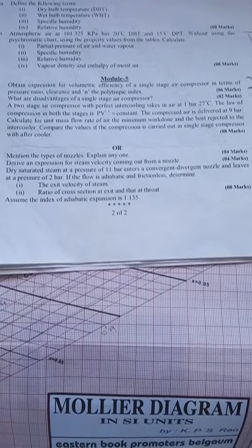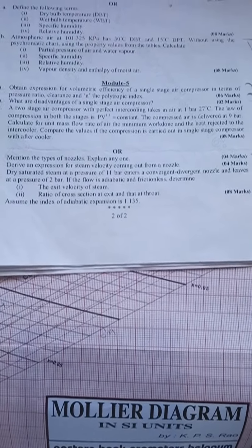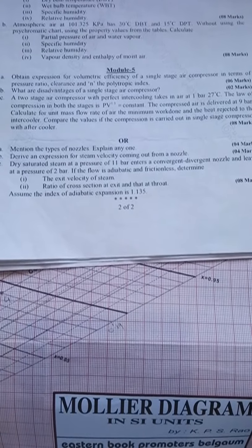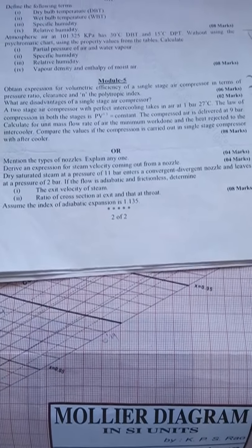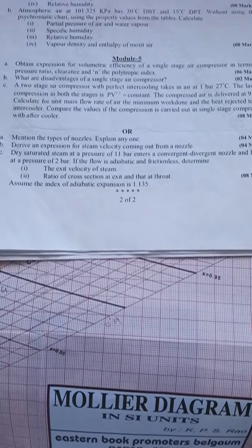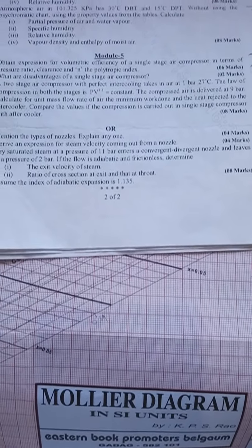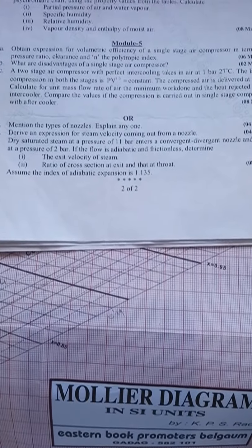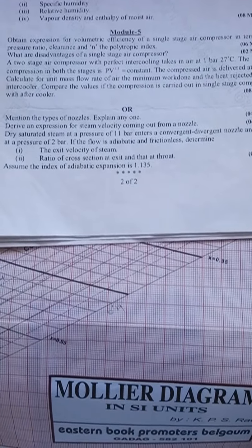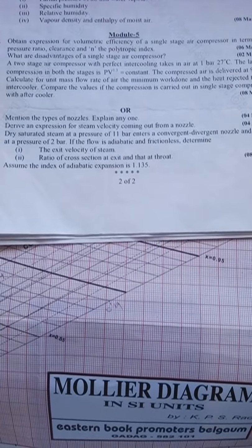Now I will take up one problem, third problem 10th C. Just take the problem. Dry saturated steam - underline this word, very important given data in this problem. That is dry saturated. Dry saturated means what? Dry means x is equal to 1. This data he has given here already. So dry saturated steam at a pressure of 11 bar enters the CD nozzle, that is convergent divergent nozzle, and leaves at pressure of 2 bar. If the flow is adiabatic and frictionless, means it is an ideal case.